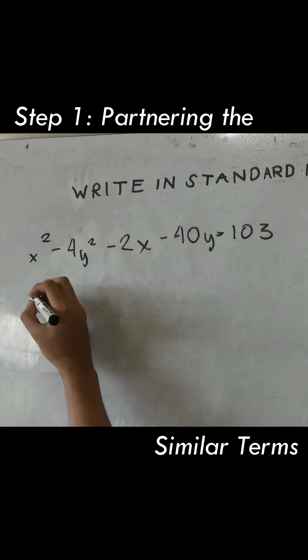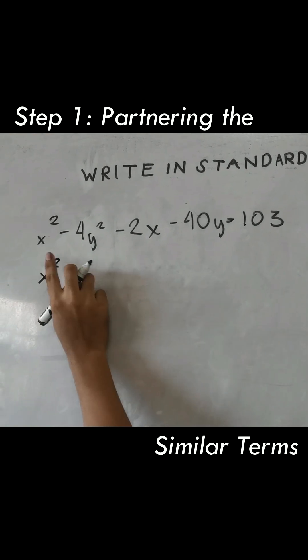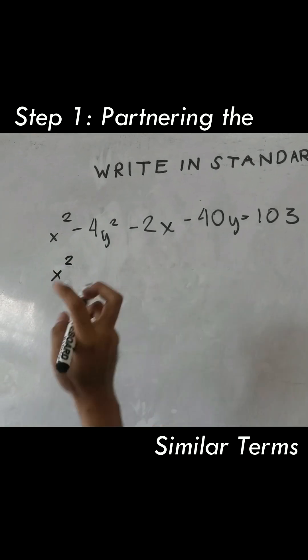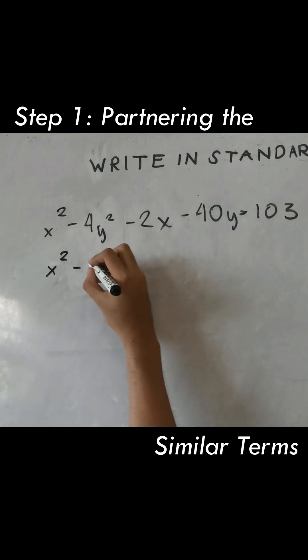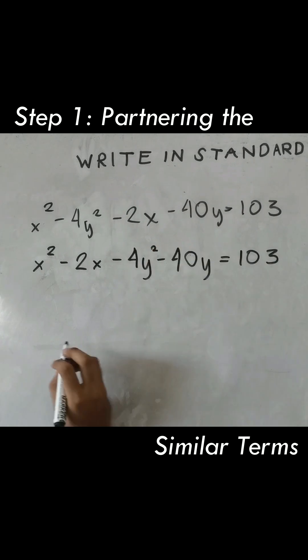So here we have the variable that has the greatest exponent, and its partner, minus 2x, so we put them next to each other — squared here.